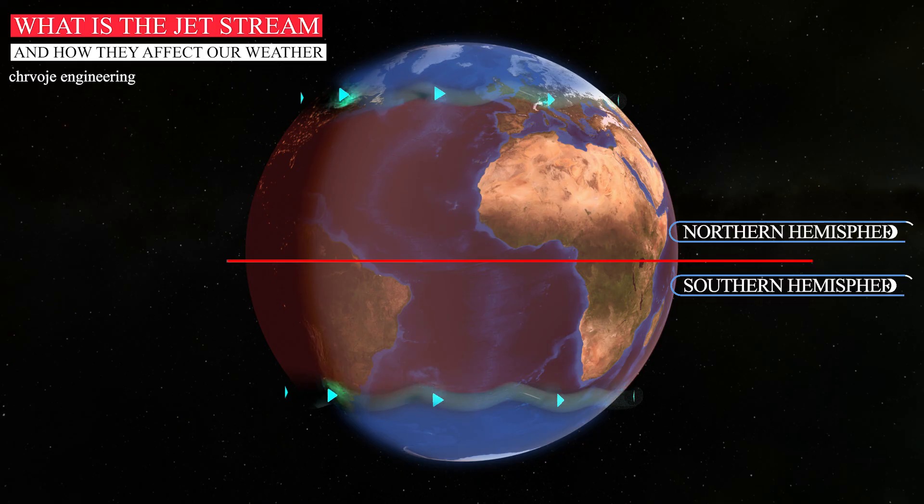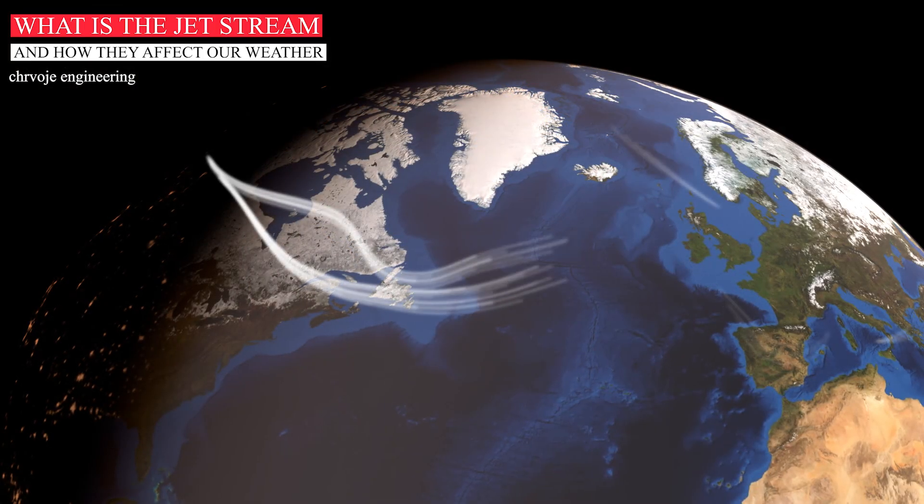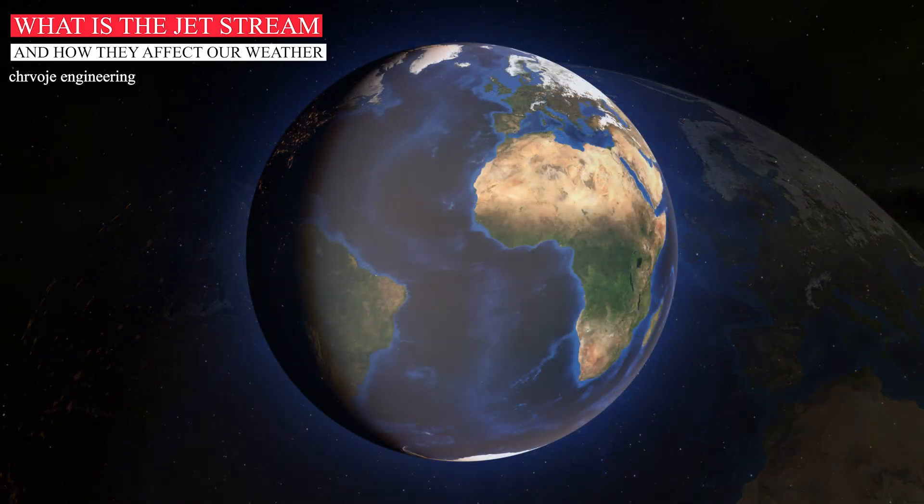Theoretically, this jet encircles the Earth in a continuous line. But in reality, it is more broken up as differential heating of land-sea masses lead to west to east temperature contrasts, as well as north to south.